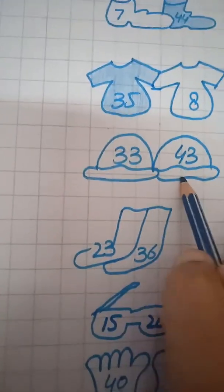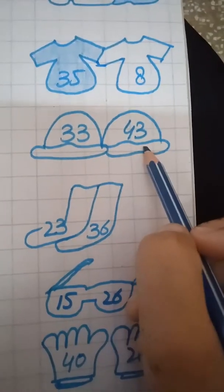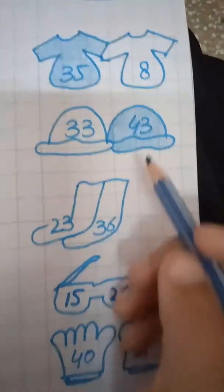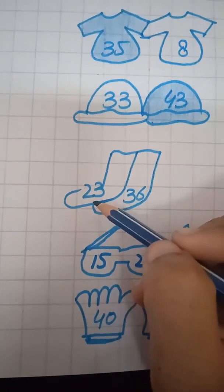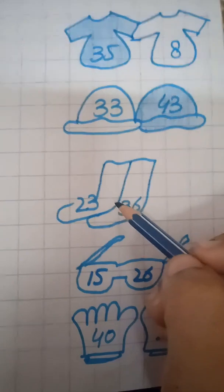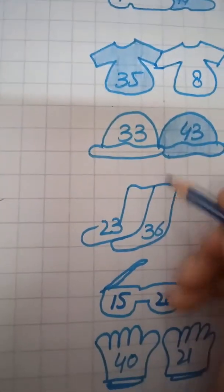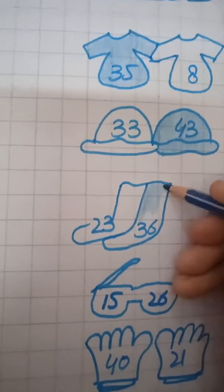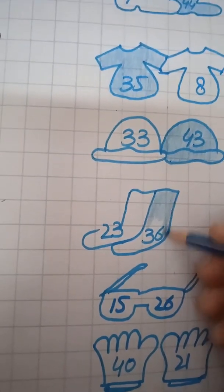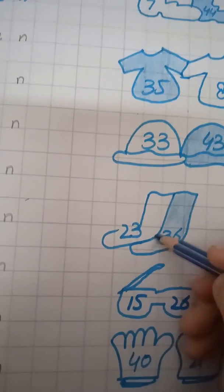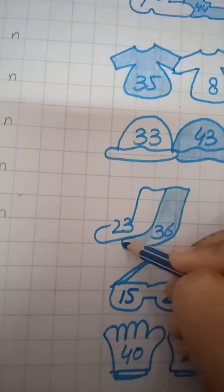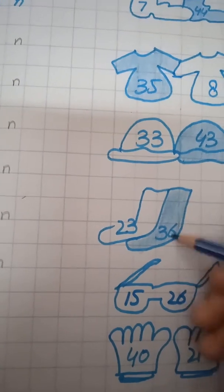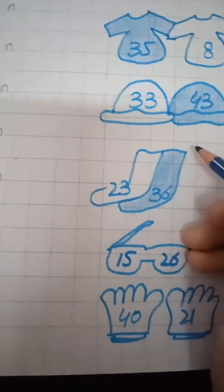And here we have done. Now come to next. These are two caps, 33 and 43. 43 is greater. So we will color 43. And here we have done our color. Now look at these numbers, 23 and 36. Now we will color the socks of 36.